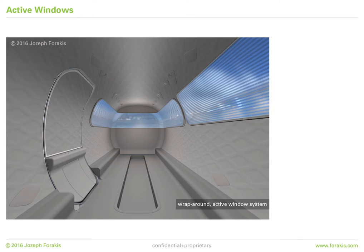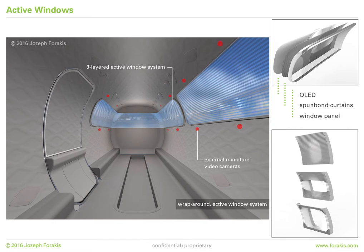Active windows. The centerpiece of the interior is the seamless wraparound window system that creates an atmosphere of roominess, transparency, and connection with the outside. The three-layered system starts with thin flexible OLED panels using daylight spectrum filters. The active matrix illumination is fully interactive to digital inputs. A series of miniature video cameras mounted on the exterior surface of the fuselage provide input for changing natural light in real time.